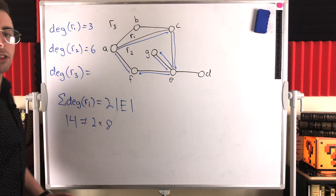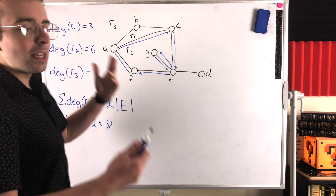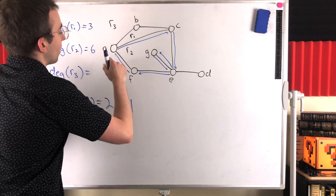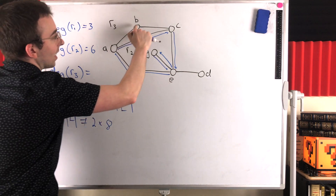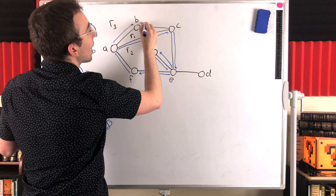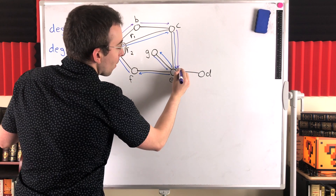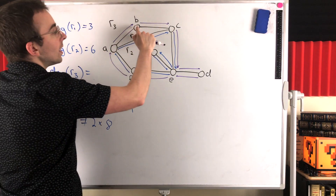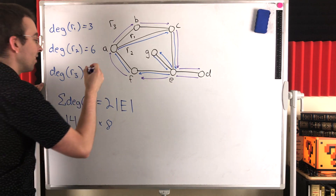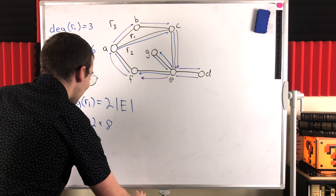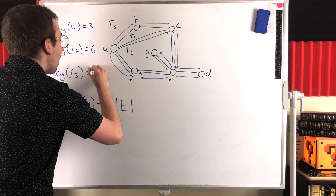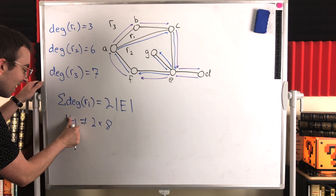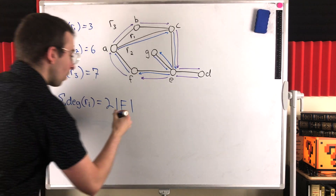A similar thing is going to happen with the degree of region R3. The boundary of R3 can be a bit tricky with the external region, but it's the same idea — just the vertices and edges touching region R3. If we go for a shortest closed walk around the boundary of the external region R3, we have to go down the non-cycle edge and then come back, counting it again. The total length of that walk is one, two, three, four, five, six, seven. So the degree of R3 is seven. Now we had a total of eight edges, and three plus six is nine, nine plus seven is 16 — which is exactly two times eight. It works out perfectly.